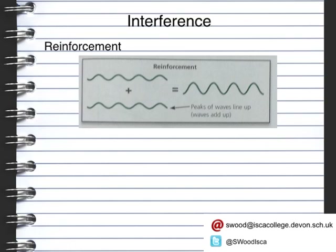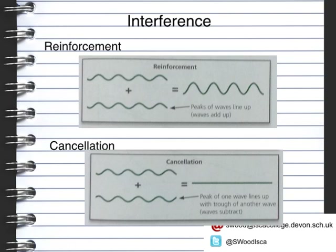The second is the opposite to reinforcement and that is called cancellation. This is where the waves are out of phase — they are identical waves, but the trough of one is aligned with the peak of the other. So if one is negative one and the other is positive one, they add up to zero. You subtract the two waves from each other.